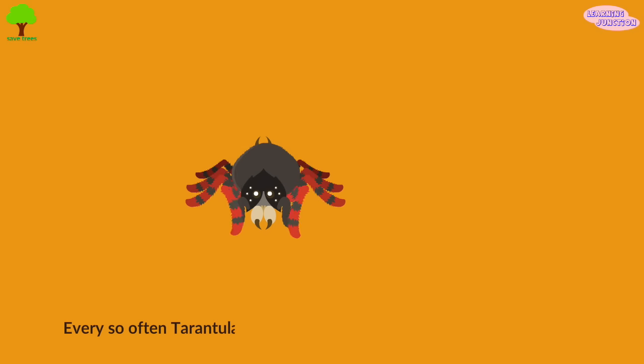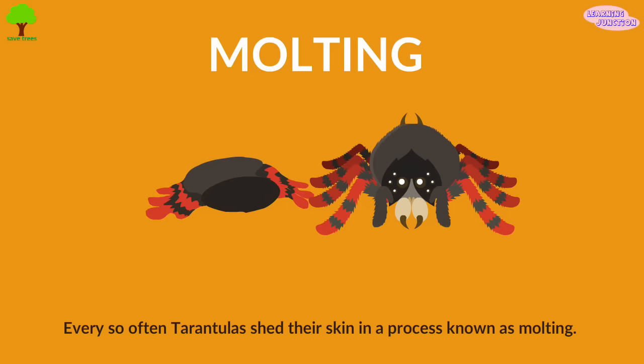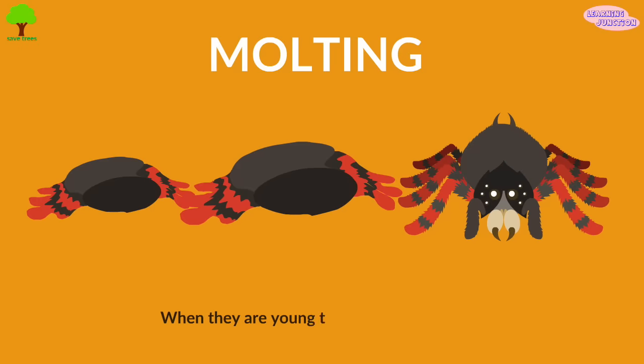Every so often, tarantulas shed their skin in a process known as molting. When they're young, they molt many times. Once they're older, they molt around once a year.